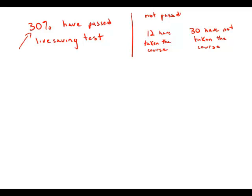Well, if 30% have passed the lifesaving test, that means 70% have not passed it. Of these, we have the group of 12 people who have taken the course and 30 who have not taken the course. Those are the only two options, so those 42 people together constitute 70%.